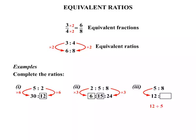We divide 12 by 5, and that gives us 2.4. In other words, we must have multiplied the 5 by 2.4 to get 12. So we must do the same to the 8. If we have 8 and we multiply by 2.4, we end up getting 19.2.